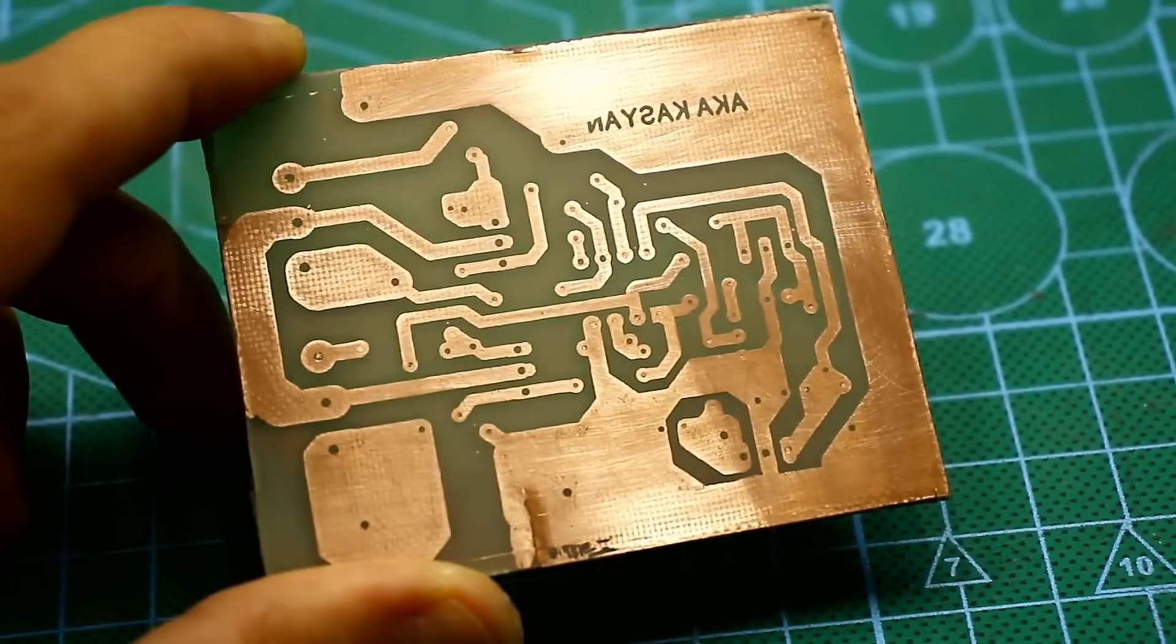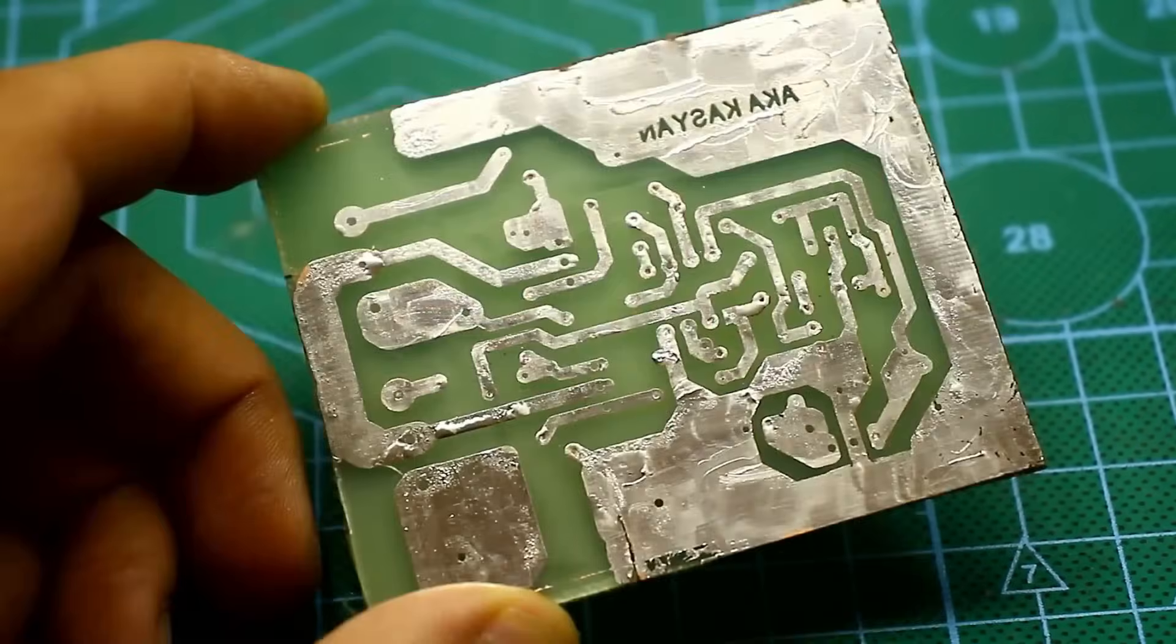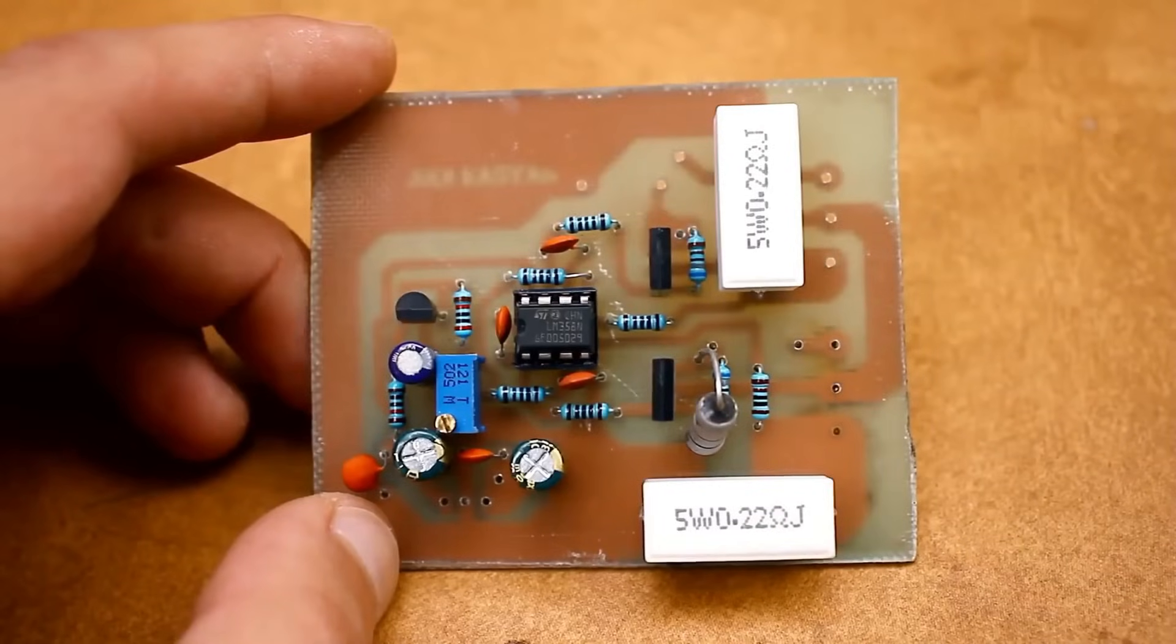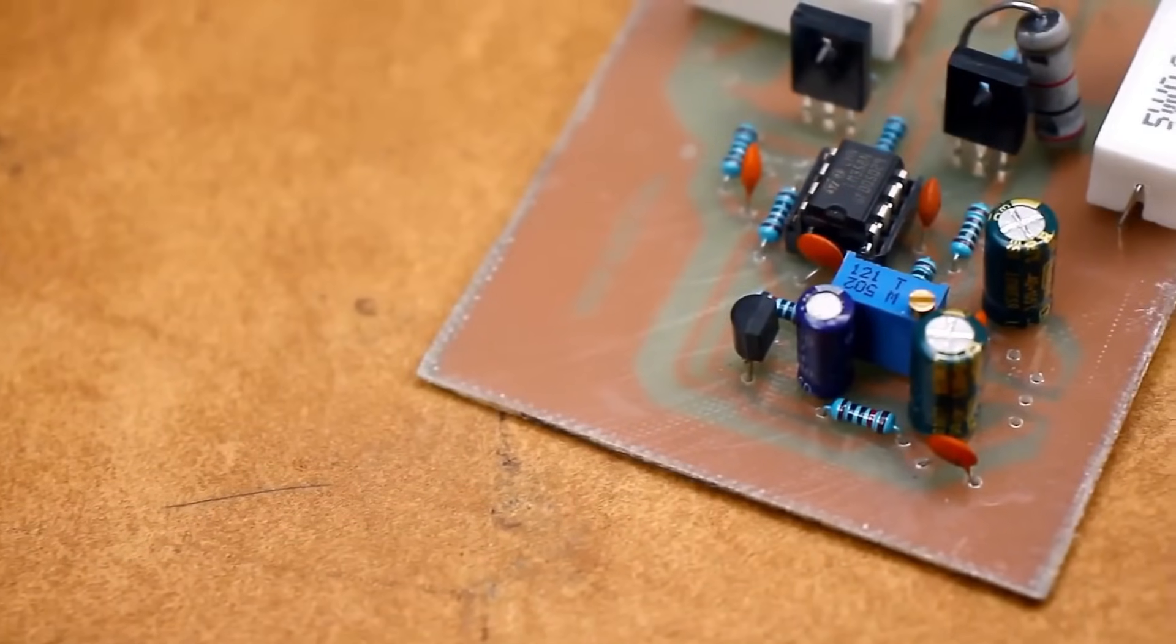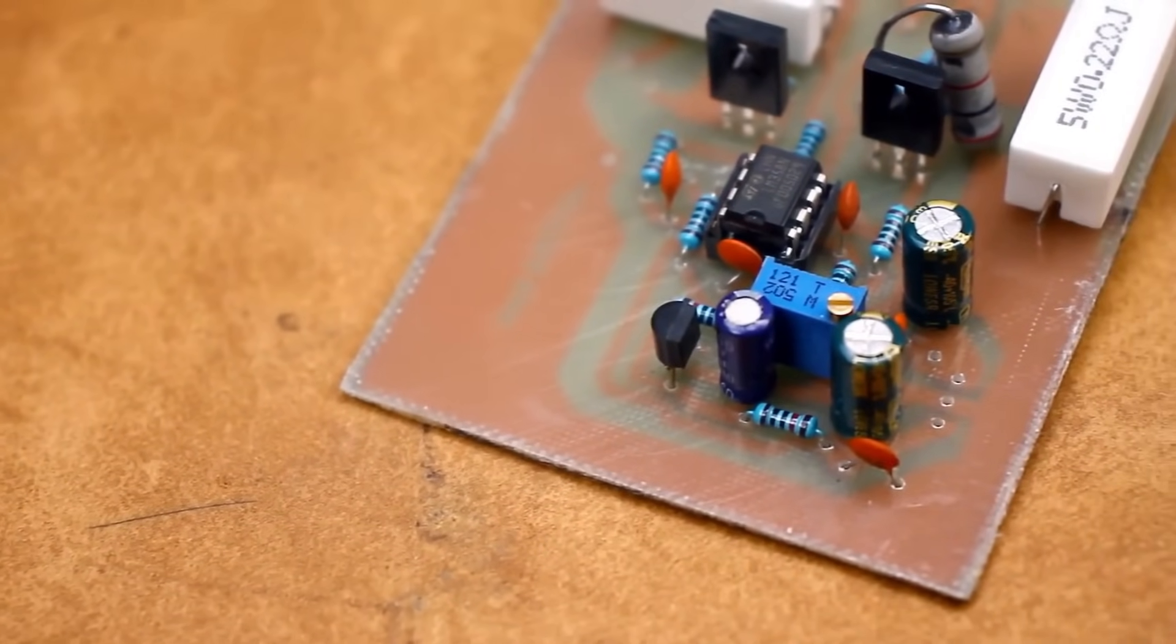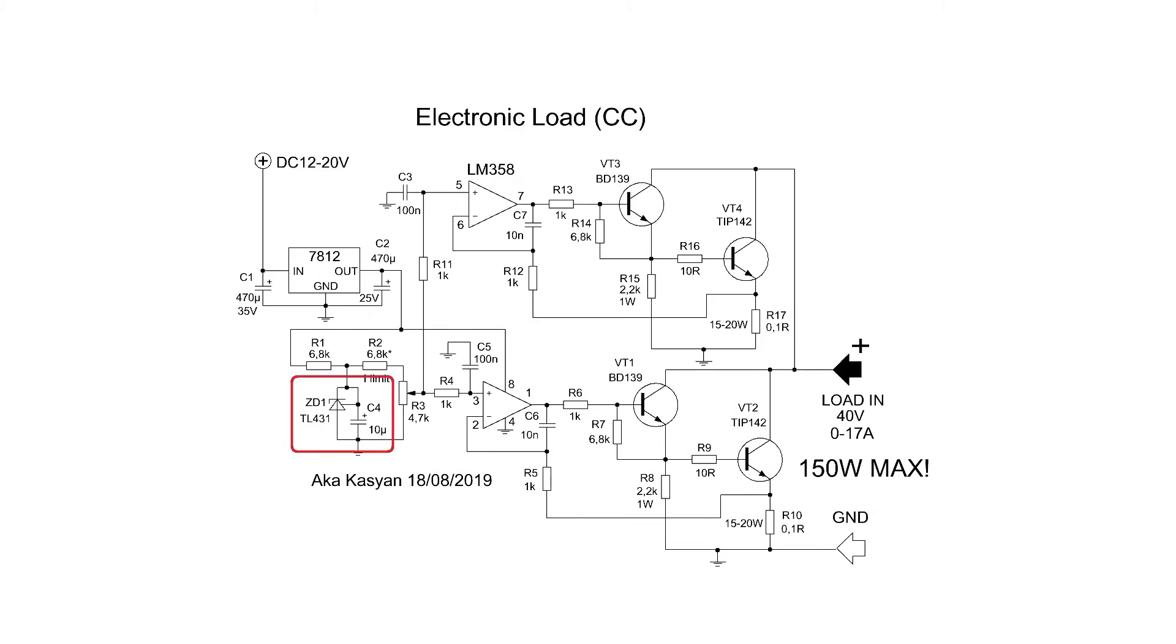You can download the printed circuit board along with the project's complete archive via the link in the description. This voltage is needed to power the operational amplifier itself and the reference voltage source in the form of the adjustable Zener diode TL431. The microchip is used as a simple Zener diode only, highly accurate.